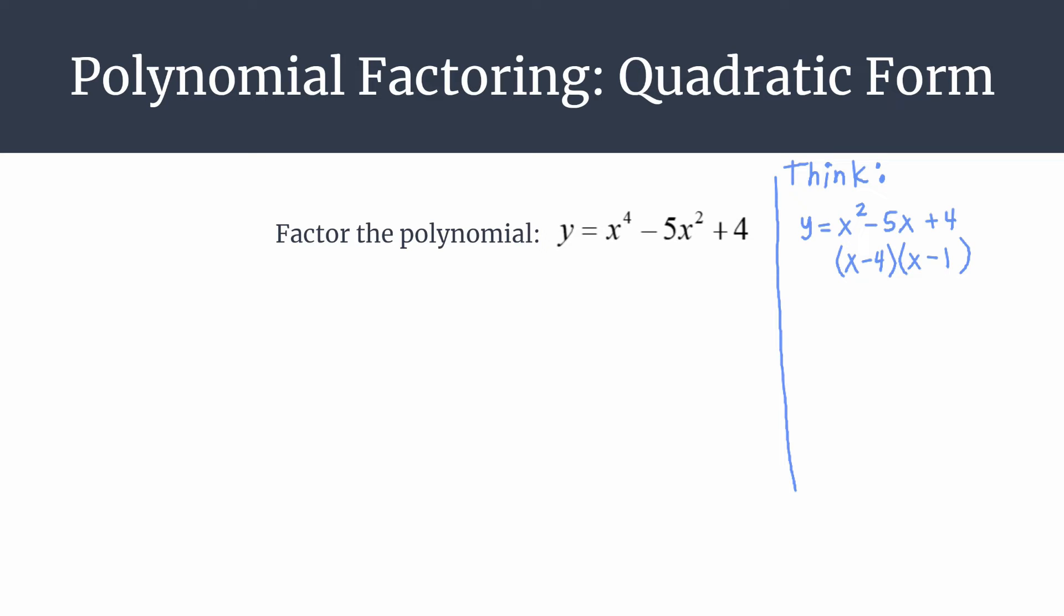Hopefully you're seeing how this line of thought will help us factor our fourth degree polynomial that we actually want. Similarly, we can factor it into two binomials. When you're multiplying out these two binomials to get back to the original polynomial, you're going to multiply those first two terms. So instead of x and x, x squared times x squared gives us that x to the fourth term that we want.